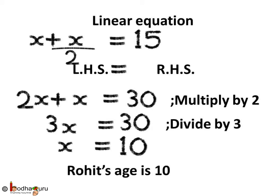In this linear equation x plus x by 2 equals 15, LHS is equal to RHS. Now multiplying both LHS and RHS by 2, because this way we won't have the fractional value of x. x multiplied by 2 becomes 2x, and x by 2 multiplied by 2 becomes x. So on the LHS we get 2x plus x, and on the RHS it becomes 15 multiplied by 2, which is equal to 30. So our linear equation reduces to 2x plus x equal to 30.